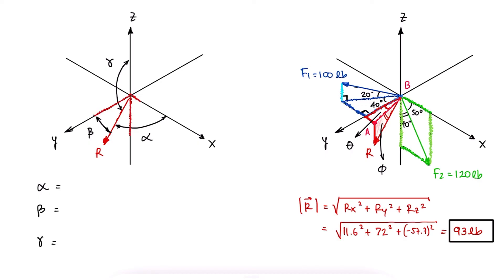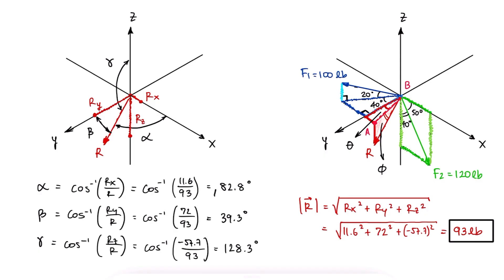And since in this case we have R as the hypotenuse, and Rx, Ry, and Rz as the adjacent side to that angle, we find these angles alpha, beta, and gamma with the inverse of the cosine function, which relates the adjacent side with the hypotenuse.